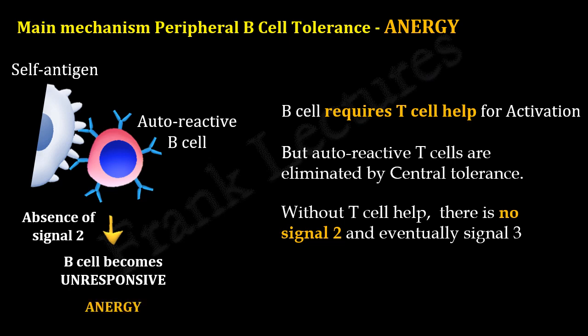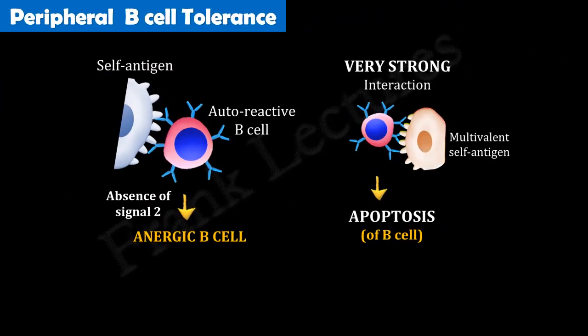These anergic B cells eventually die by apoptosis. Thus, the main mechanism of peripheral B cell tolerance is anergy, followed by apoptosis. In the next video lecture, we will talk about autoimmunity.